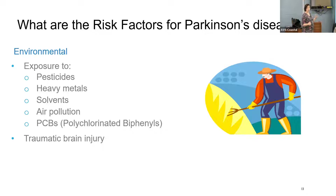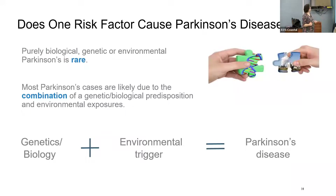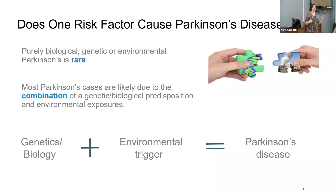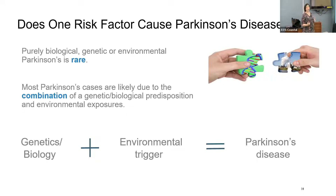Traumatic brain injury is also a risk factor, but not everyone who has one develops Parkinson's disease — we don't yet know the link. Purely biological, genetic, or environmental Parkinson's is very rare. Most cases are caused by a combination of genetic predisposition and an environmental trigger — it's almost like you have a loaded gun with your genes and then something has to pull the trigger, probably an environmental exposure at some point in your life, possibly in your twenties or forties.